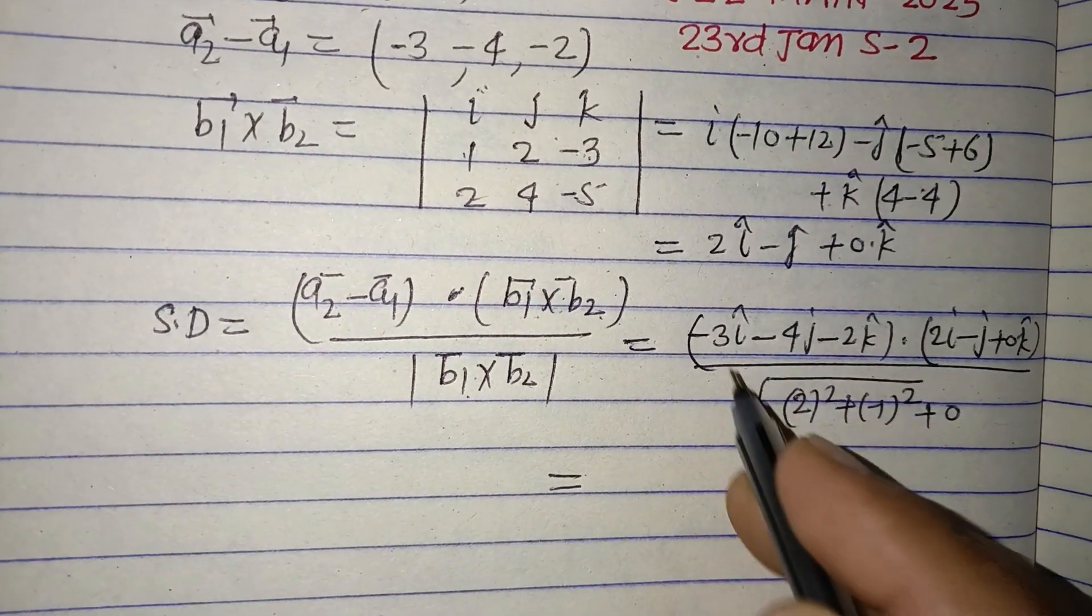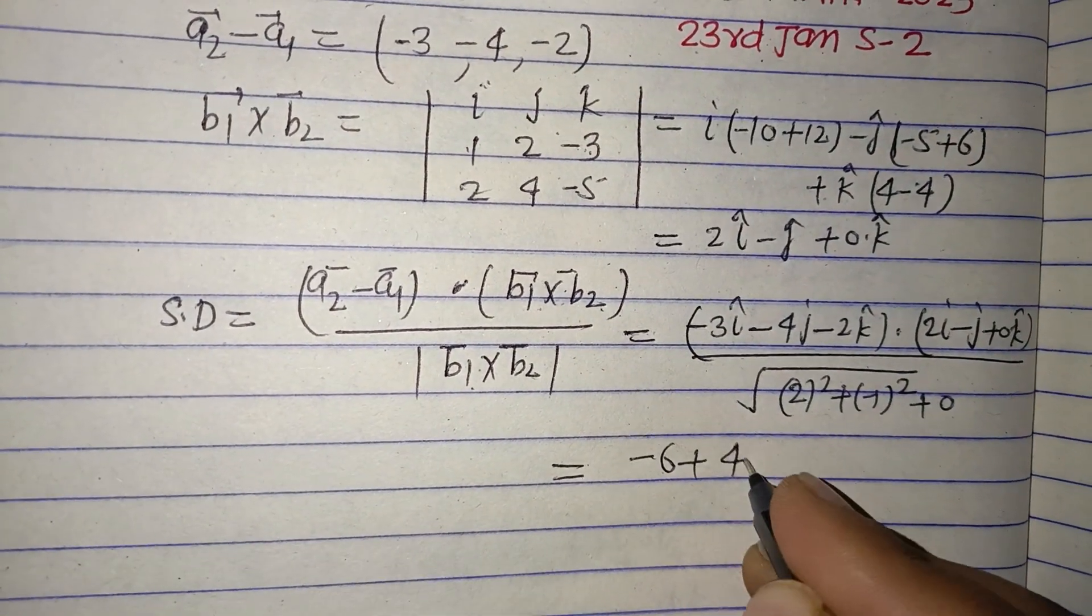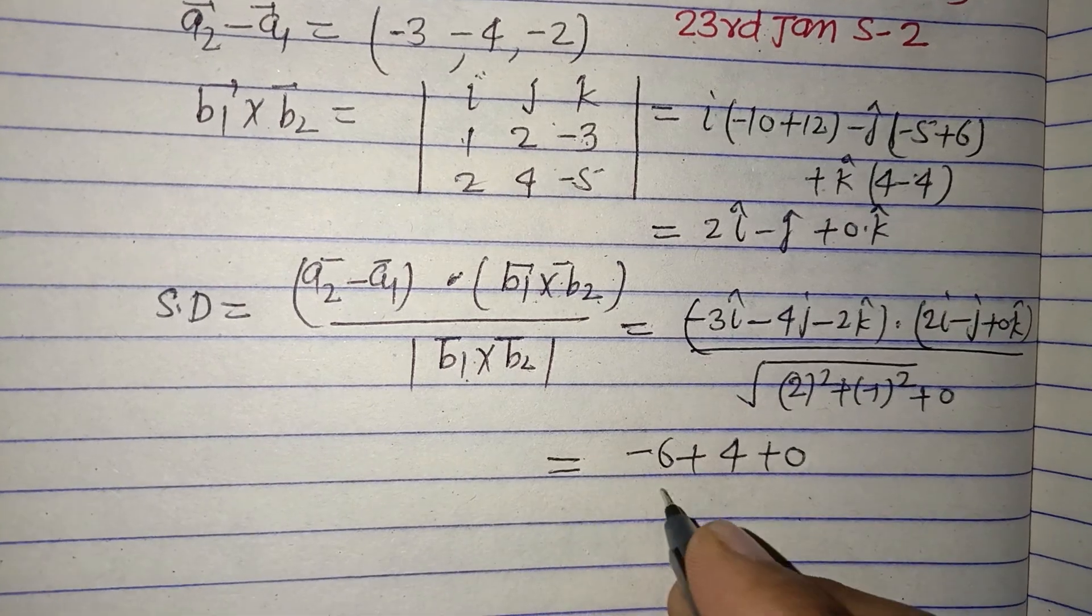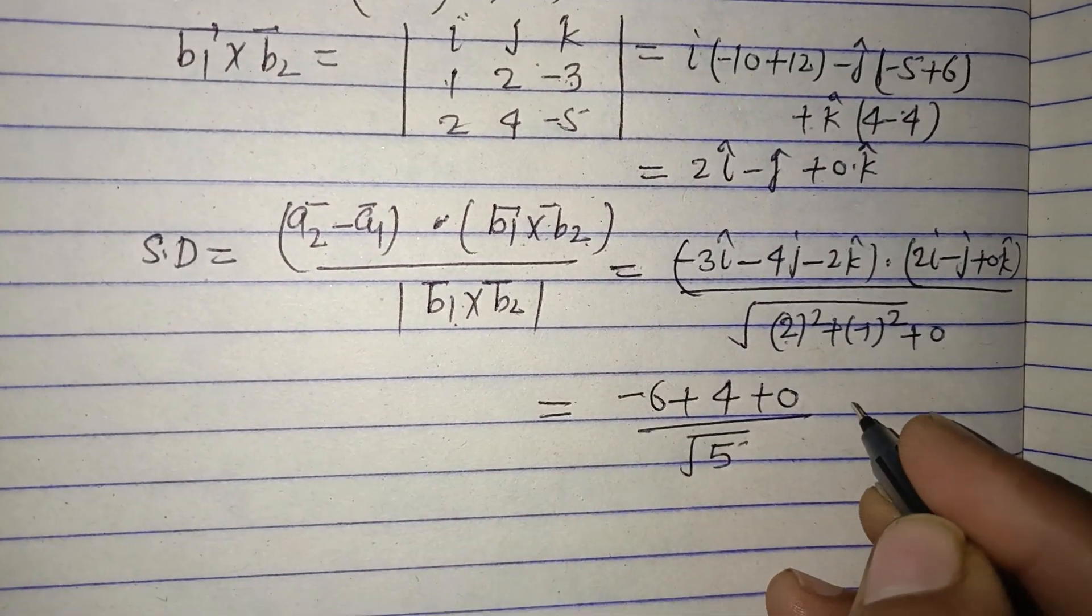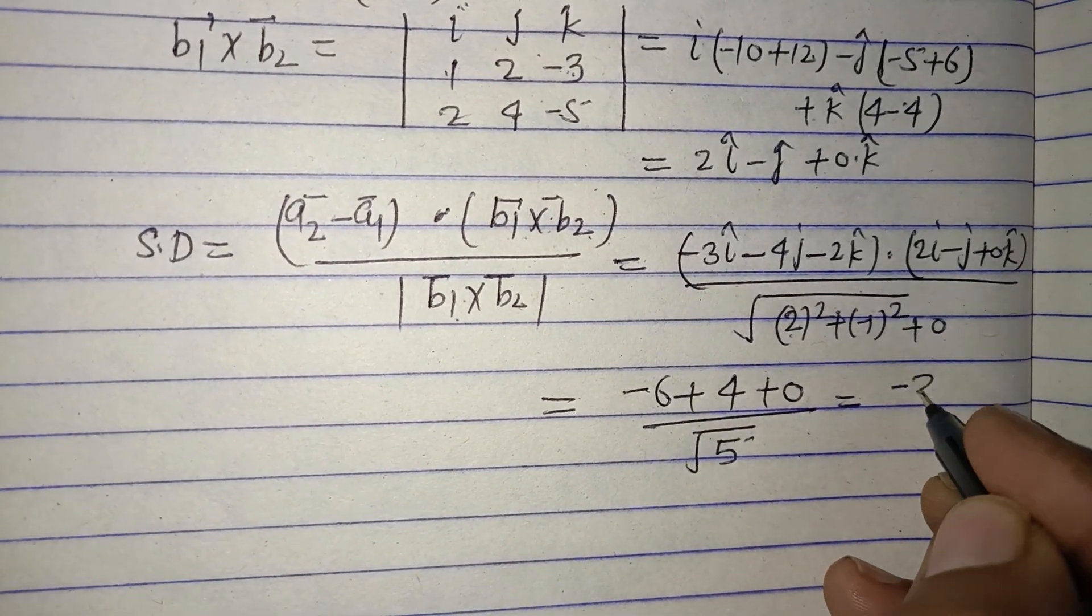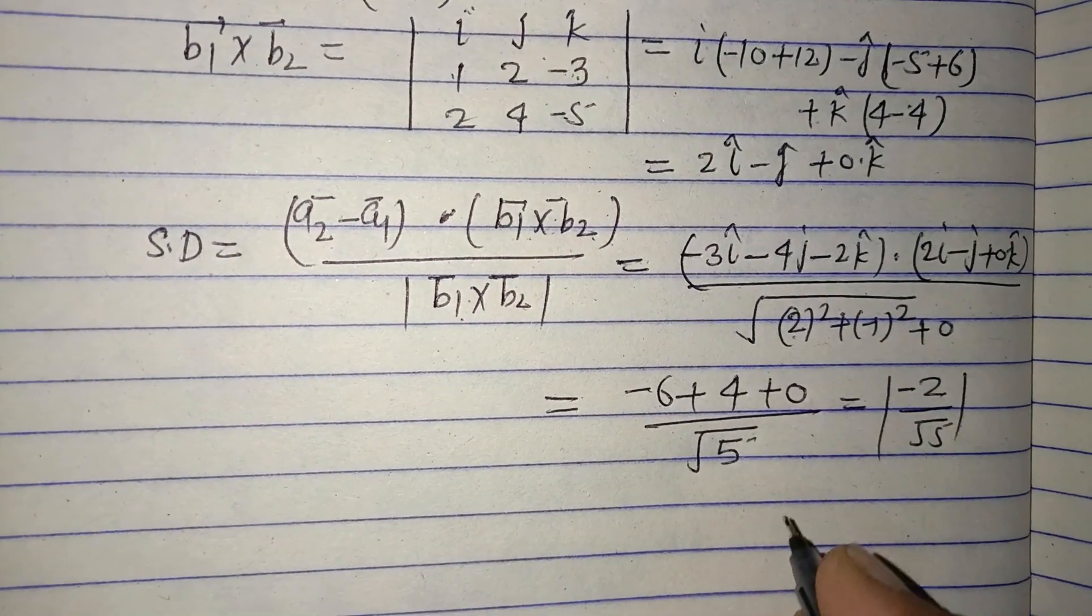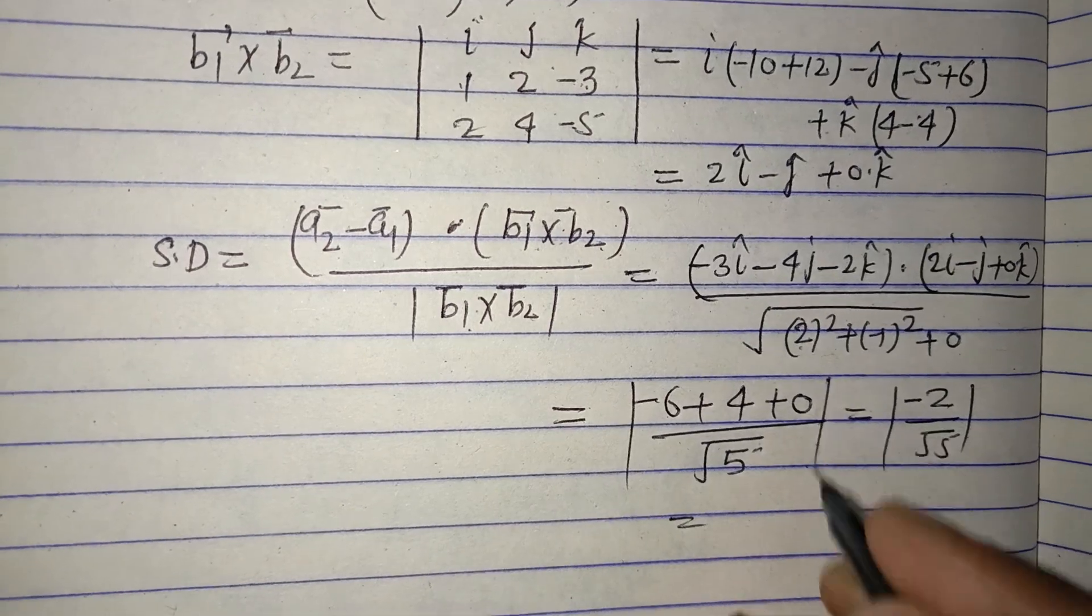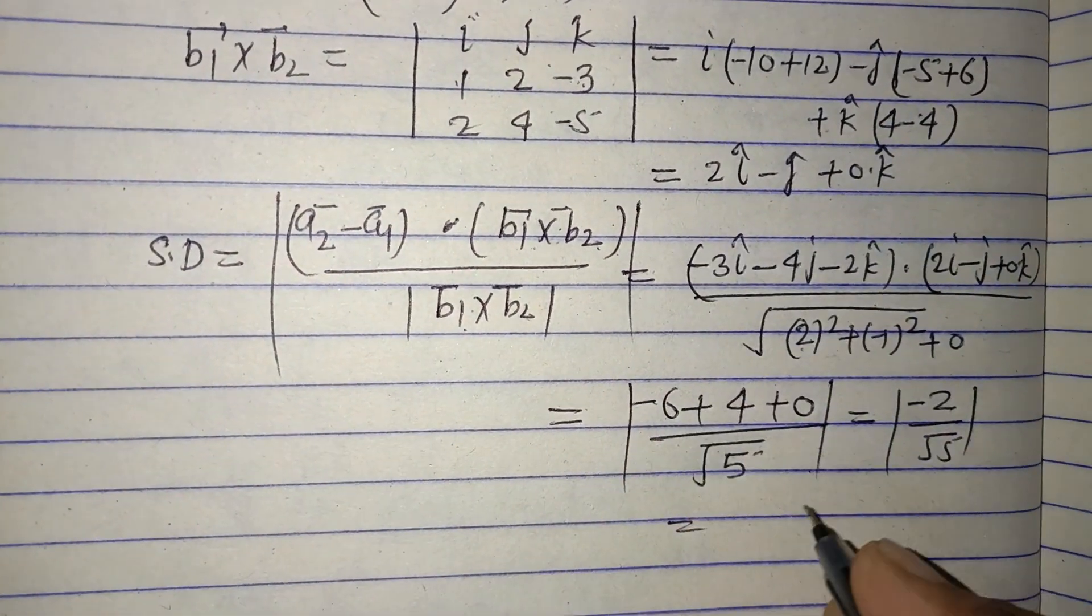Dot product gives us -6 plus 4 plus 0 over square root of (4 plus 1), which is root 5. So we get -2 over root 5. Taking the mode, we get 2 over root 5 as the shortest distance.